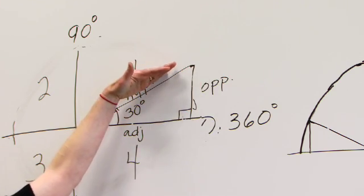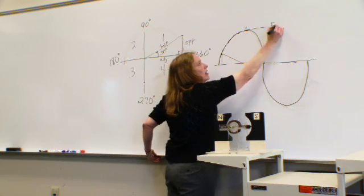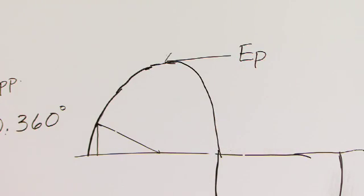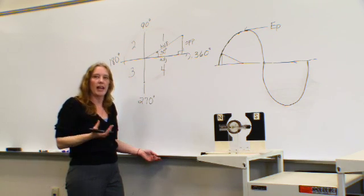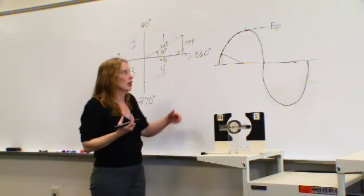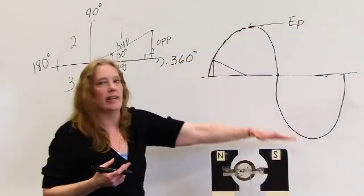The hypotenuse is going to represent our peak voltage, how high it actually gets. In AC, for AC theory, you actually only hit this peak voltage twice per cycle.